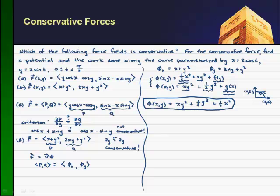So I want to go from 2, 0 to 0, 2. And I know that the work, it makes it really easy when we have a conservative force. It's just going to be phi at the end point.